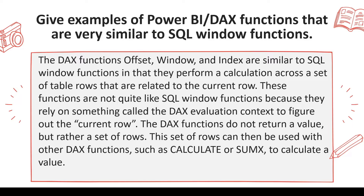The DAX functions OFFSET, WINDOW, and INDEX are very similar to SQL window functions in that they perform a calculation across a set of table rows that are related to the current row. Based on the current row and its relationships, we can find out the calculation. However, these functions are not quite like SQL window functions because they rely on something called DAX evaluation context to figure out the current row.